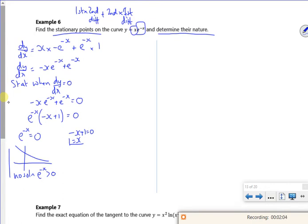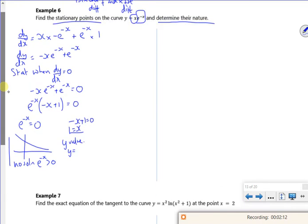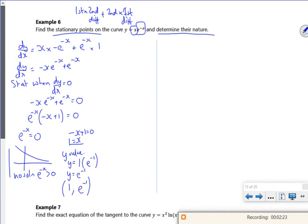If you put 1 in there, then you'll have to read that. So the y value would be, so look, 1 lots of e to the minus 1, so just e to the minus 1. So my coordinate is (1, e to the minus 1). So that's my stationary point done.